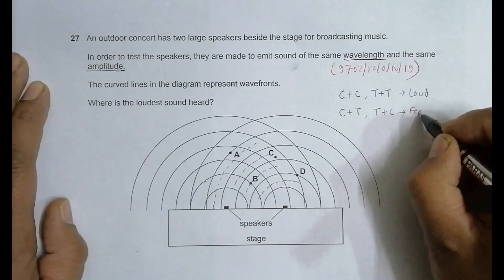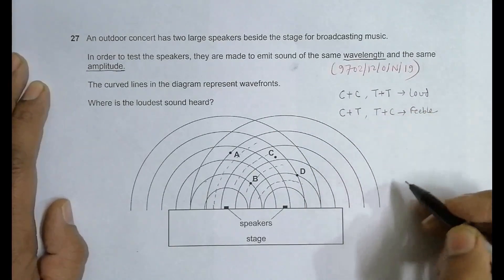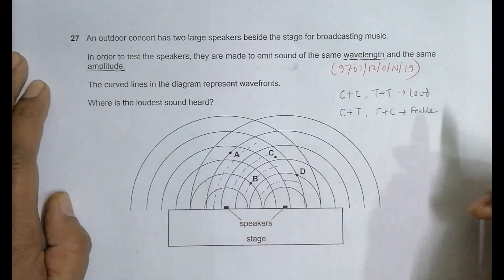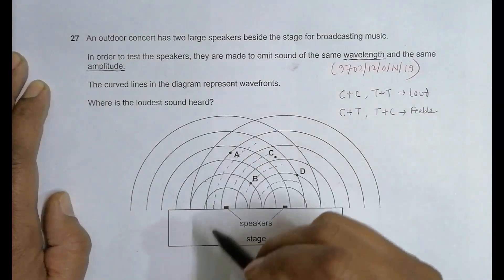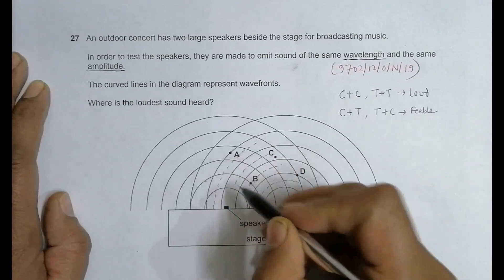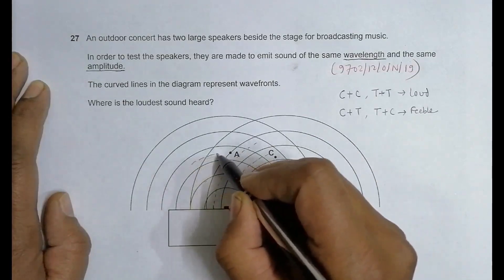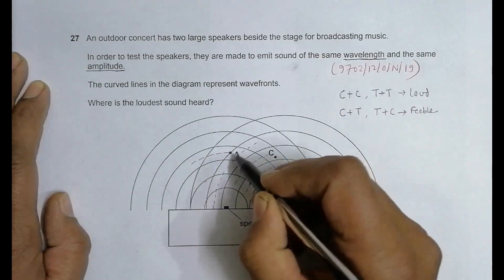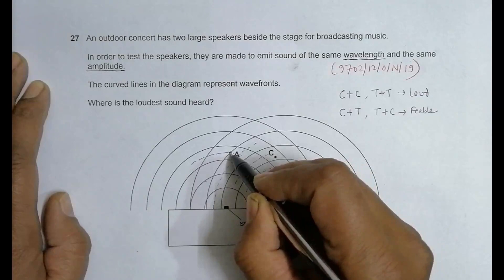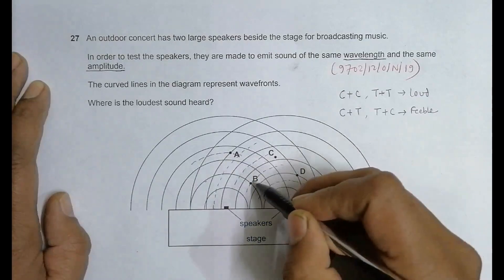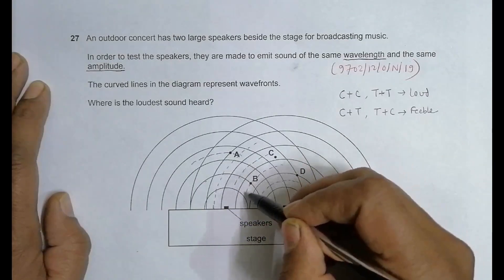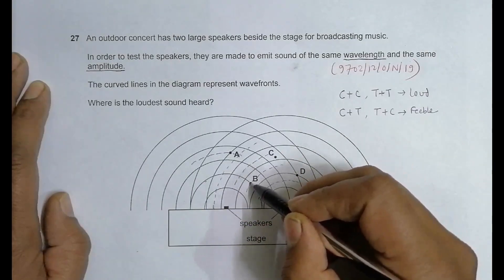If crest overlaps with a trough and trough overlaps with crest, the sound will be very much feeble. At point A we have crest due to this wave, but due to the wave from this source there will be trough. So crest and trough cancel. At B also there is crest here and trough here, so they cancel each other and the sound will be feeble.